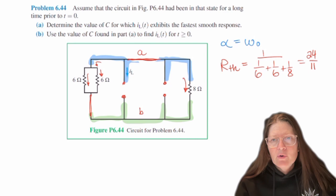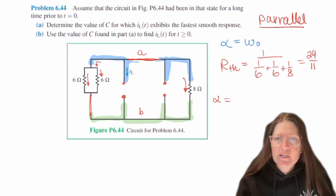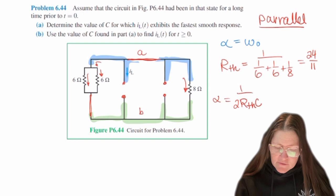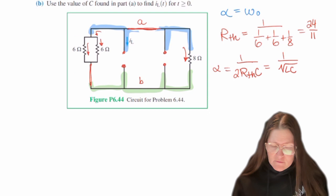So now we need to know we identified we were in parallel configuration. So with parallel configuration we know alpha, and alpha is 1 over 2RTH*C and C is our variable we want to find. And then this is 1 over the square root of LC, which is omega naught.